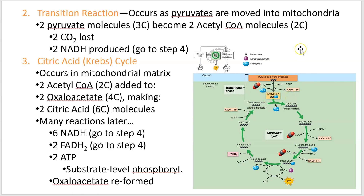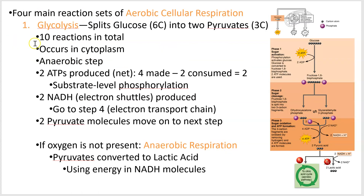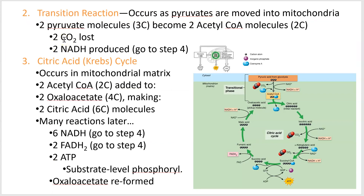We had two pyruvates from glycolysis, so we double everything. The lost carbons become carbon dioxide — so the CO2 you breathe out is very literally tiny pieces of the food you've eaten. It was carbon in the pyruvate, which was carbon in glucose, which was carbon in whatever you just ate. We also get two NADH molecules as a bonus from the transition reaction.